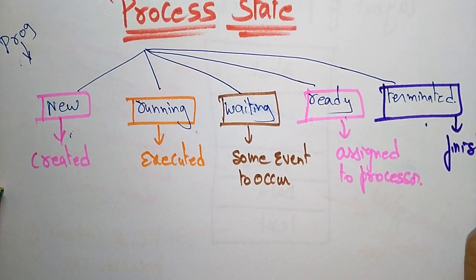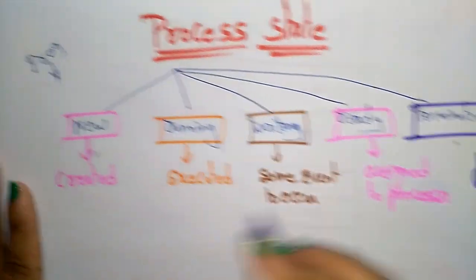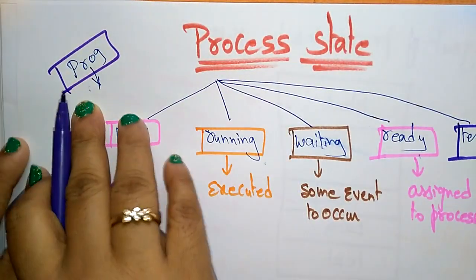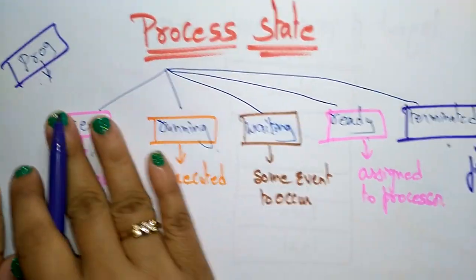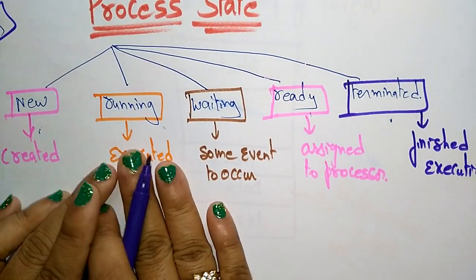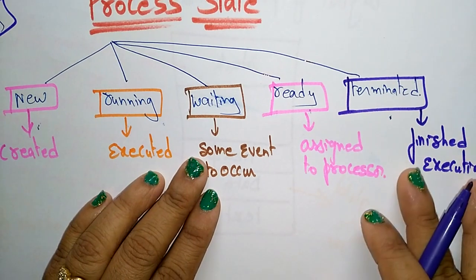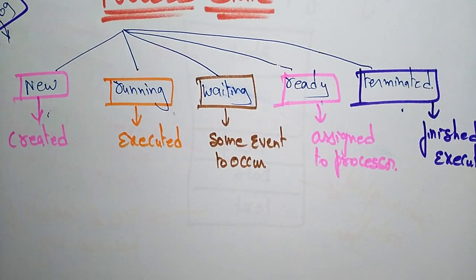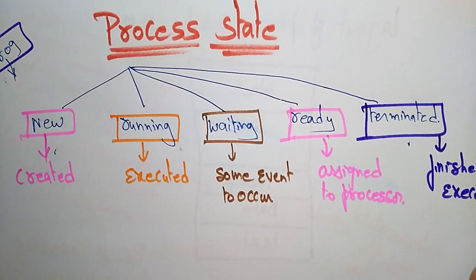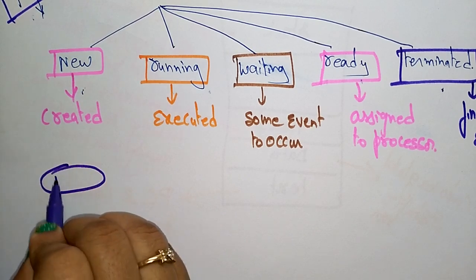Terminated means the process has finished execution. So a single program is converted into a process, and that process changes its states from new to running, running to waiting, waiting to ready, and ready to terminated. That is what we call process states.